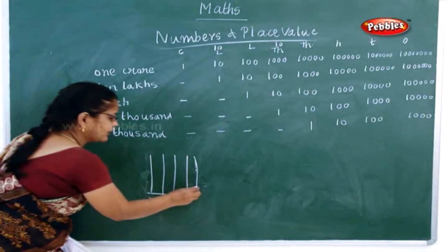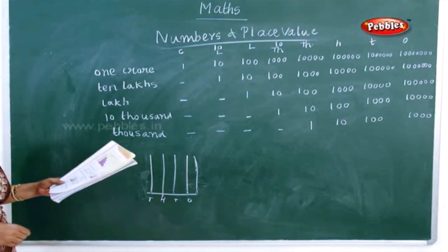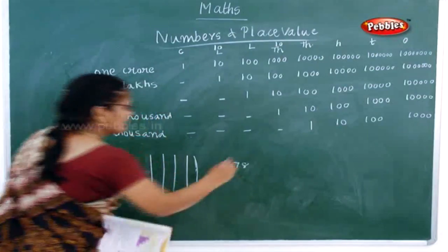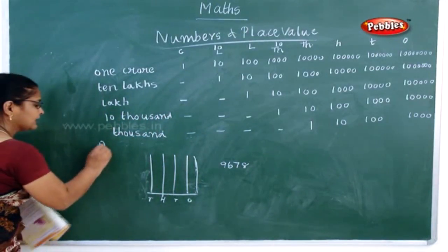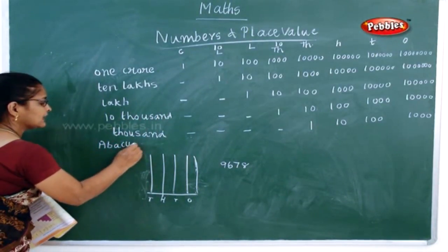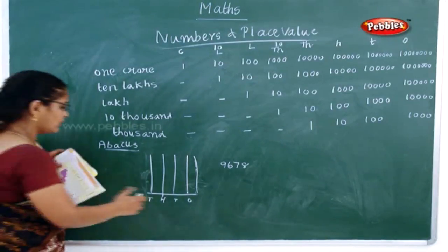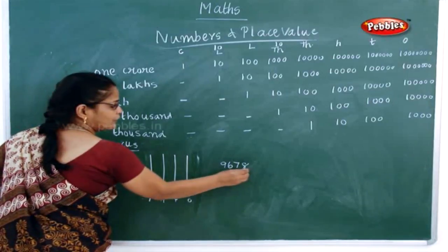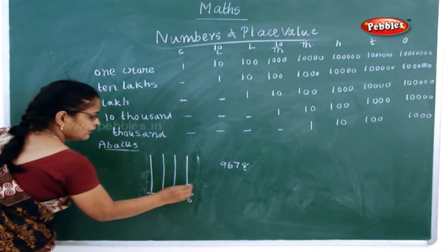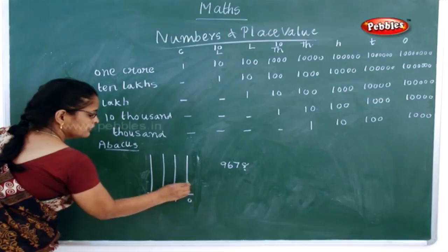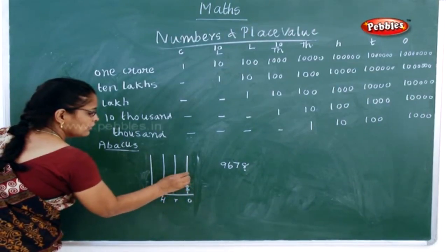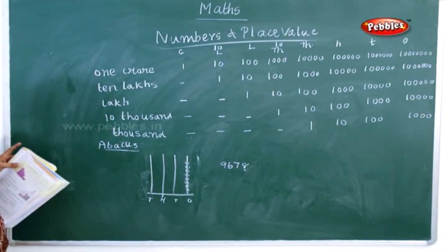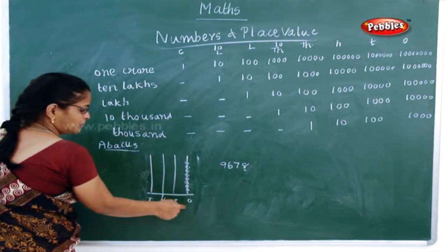Now with this I will start. This is the abacus. What happens is you have the rings in this. Now you wanted to show 9,678 in the abacus. Now what will you do here? In ones — I told you this is ones — so how many rings will you have? One, two, three, four, five, six, seven and eight. So it means 8 rings are there, it means 8 ones are there.